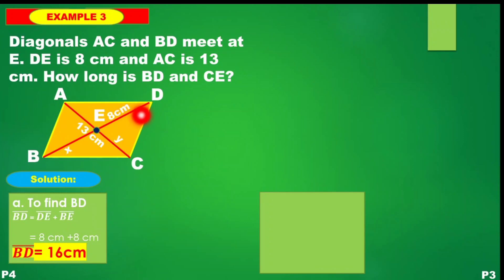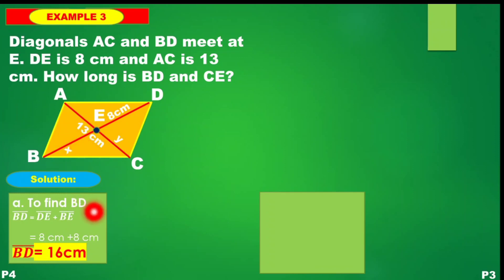So 8 + 8 gives you 16 cm. That is the length of segment BD — the full length of that diagonal.